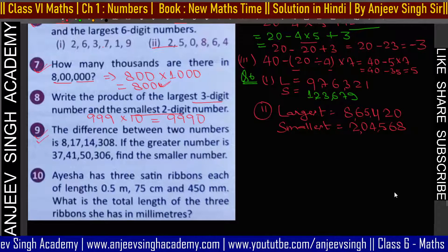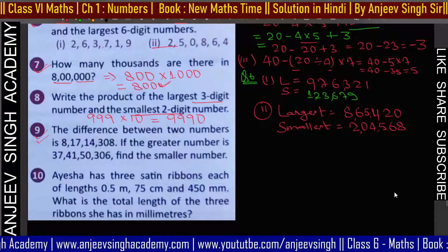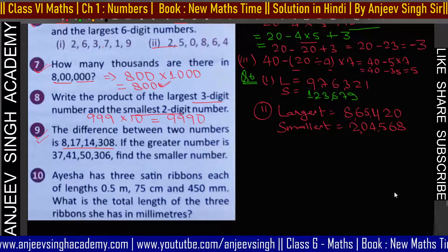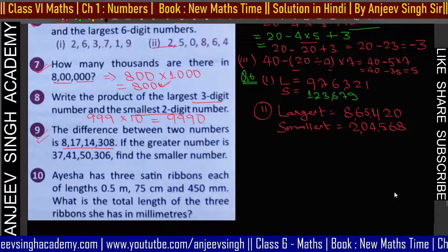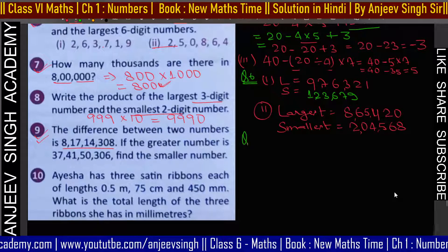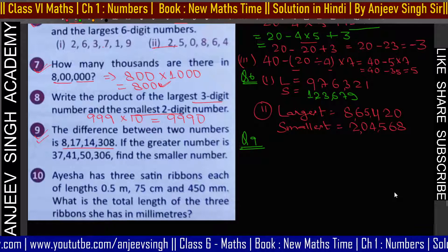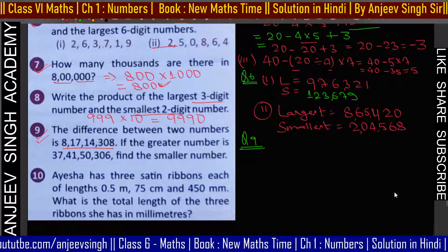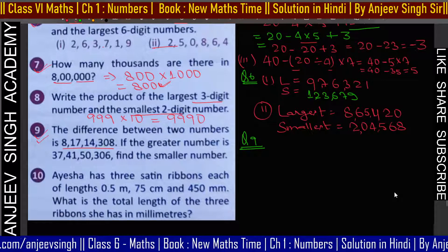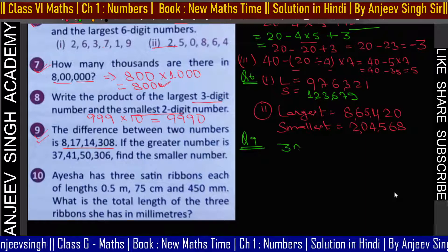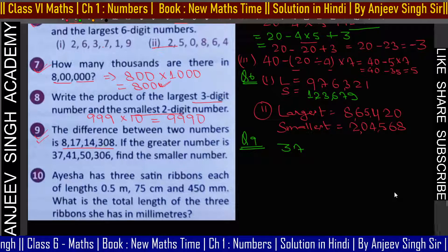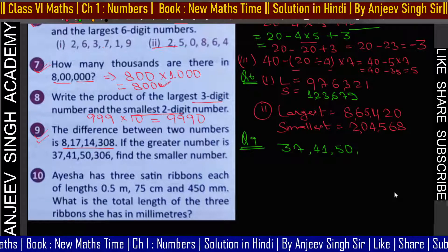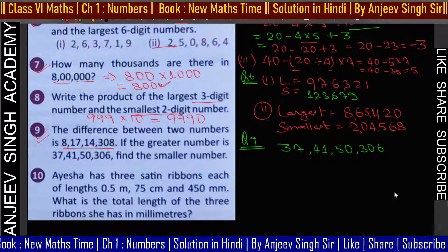Question number 9: difference between two numbers दिया है, greater number दिया है — find the smaller number। हम subtraction करेंगे। Greatest number है 37 crore 41 lakh 50,306। इसमें से minus करेंगे।